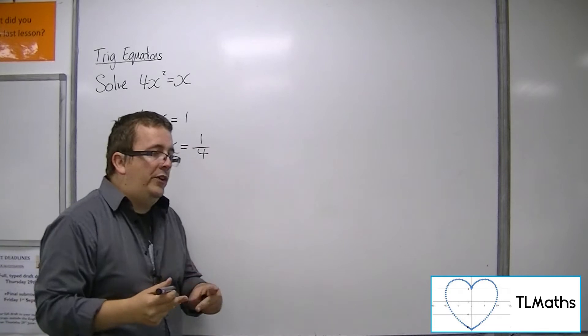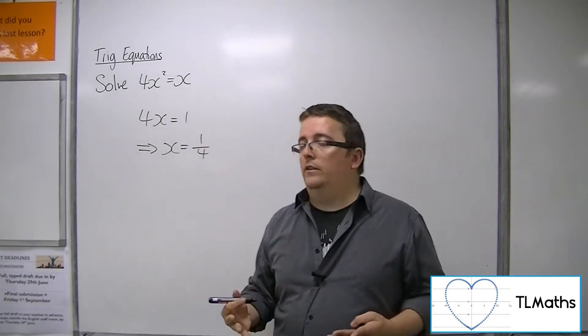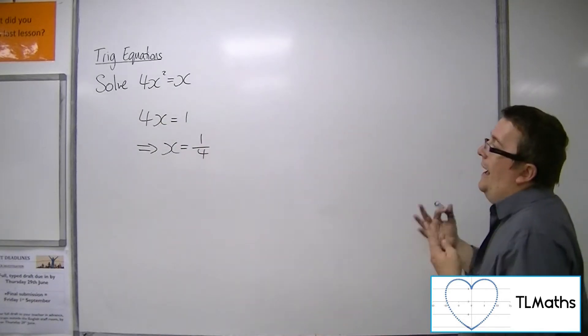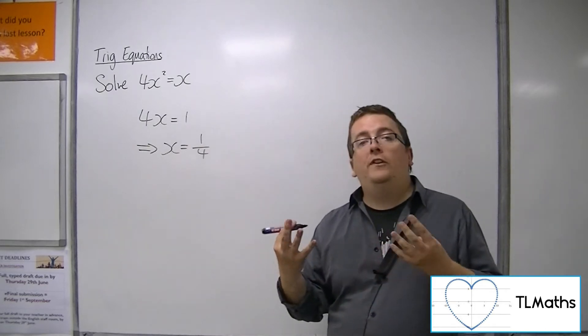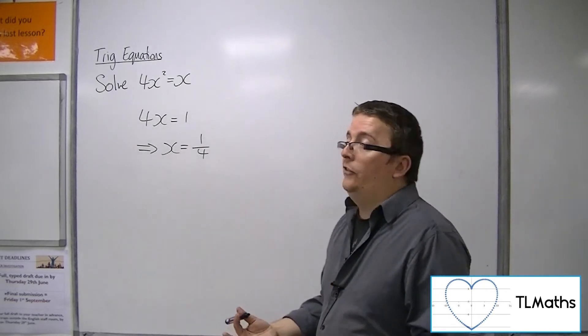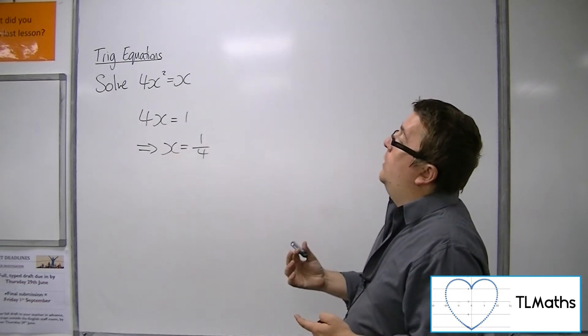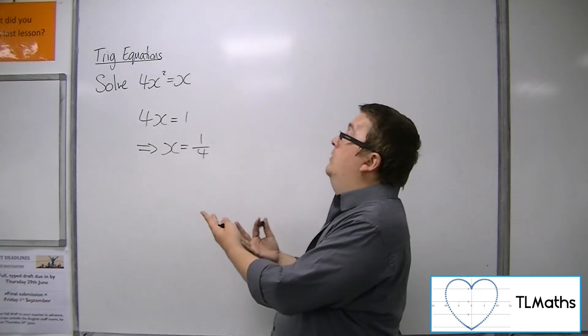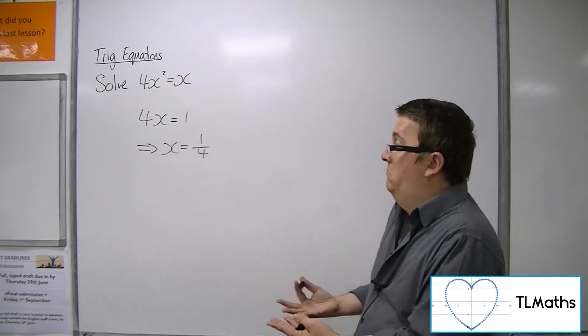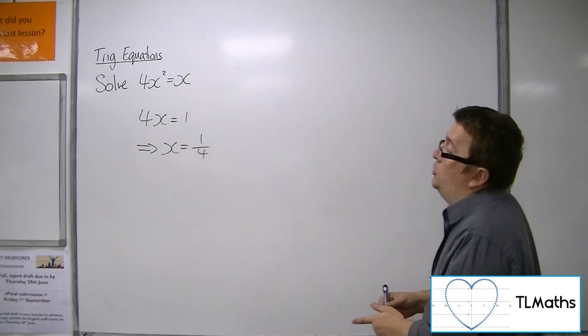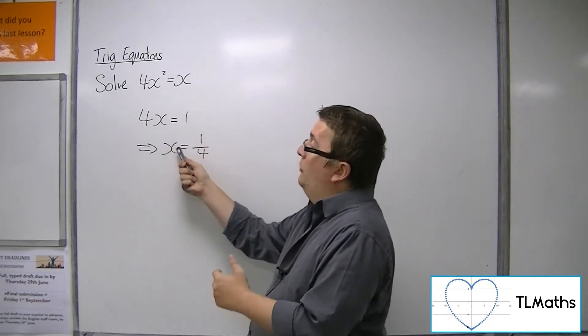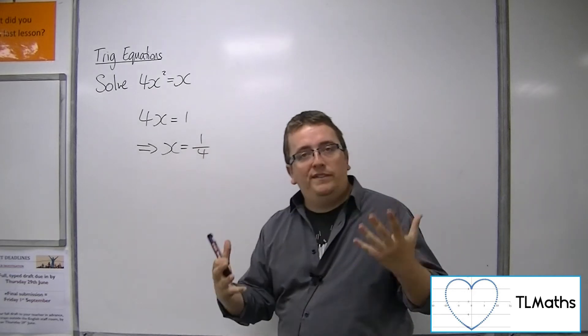Now I'm not saying that a quarter isn't a solution to this problem. However, you are forgetting that actually one of the solutions must be 0, because 4 lots of 0 squared is 0, and so left-hand side must equal right-hand side. So 0 is definitely a solution, but the algebraic process that we've gone through has not identified it.